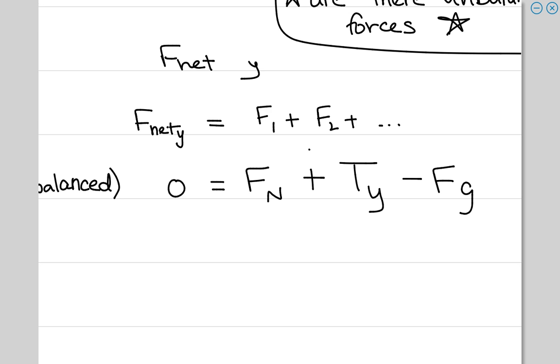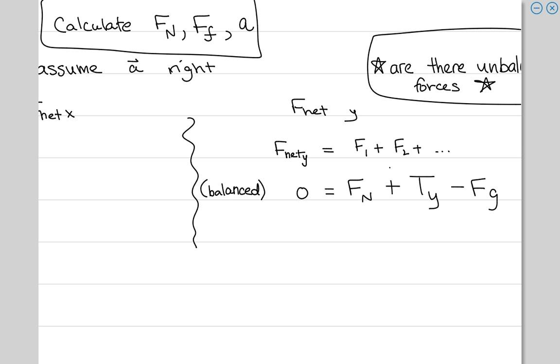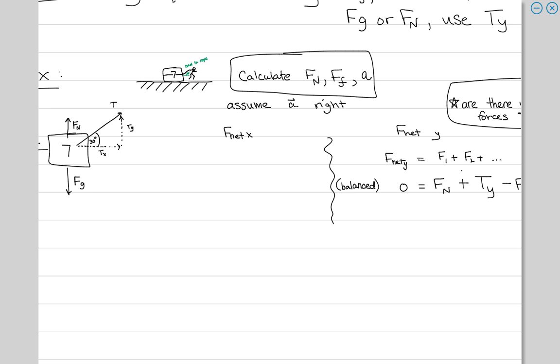So this is critical. This is so critical, like especially the first line. I mean the fact that you have it separated into X and Y, that's critical. But this in general. Net force equals the sum of all the forces involved. And then you understand that it's balanced, so the net force is zero. And then you have this.